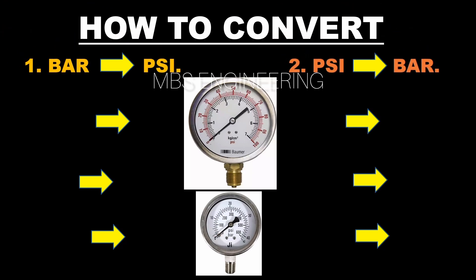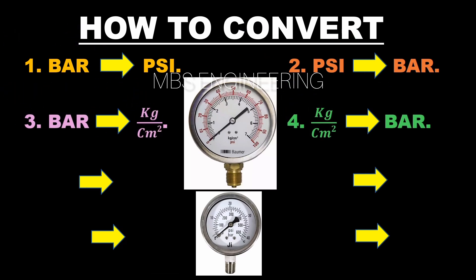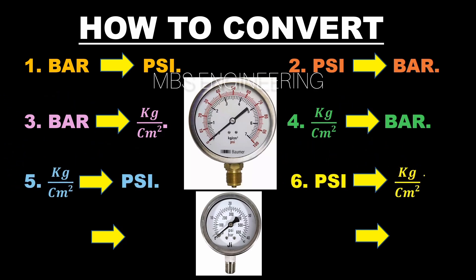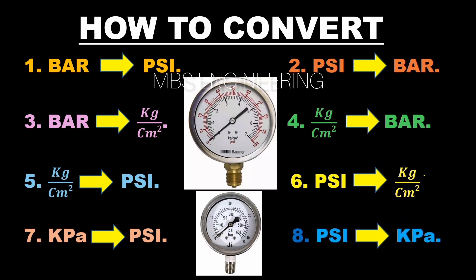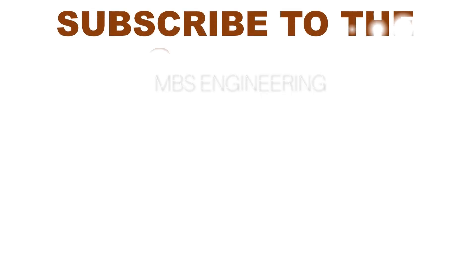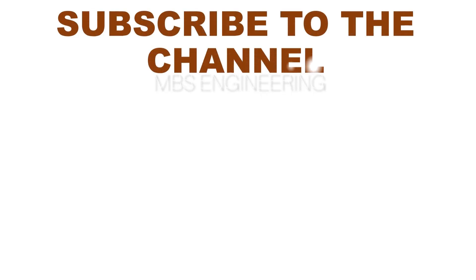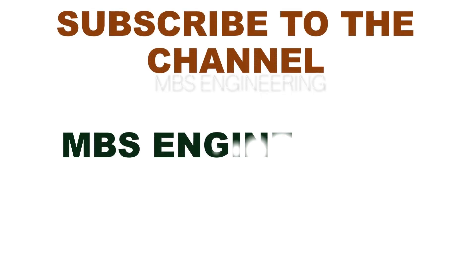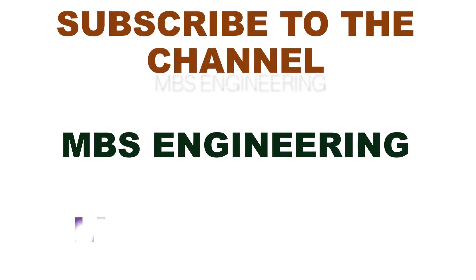We hope everyone understands how to convert bar to PSI and PSI to bar, bar to kilogram per centimeter square and kilogram per centimeter square to bar, kilogram per centimeter square to PSI and PSI to kilogram per centimeter square, and kilopascal to PSI and PSI to kilopascal. Thank you for watching. Don't forget to subscribe to the channel for more informative videos. Please like and leave a comment.